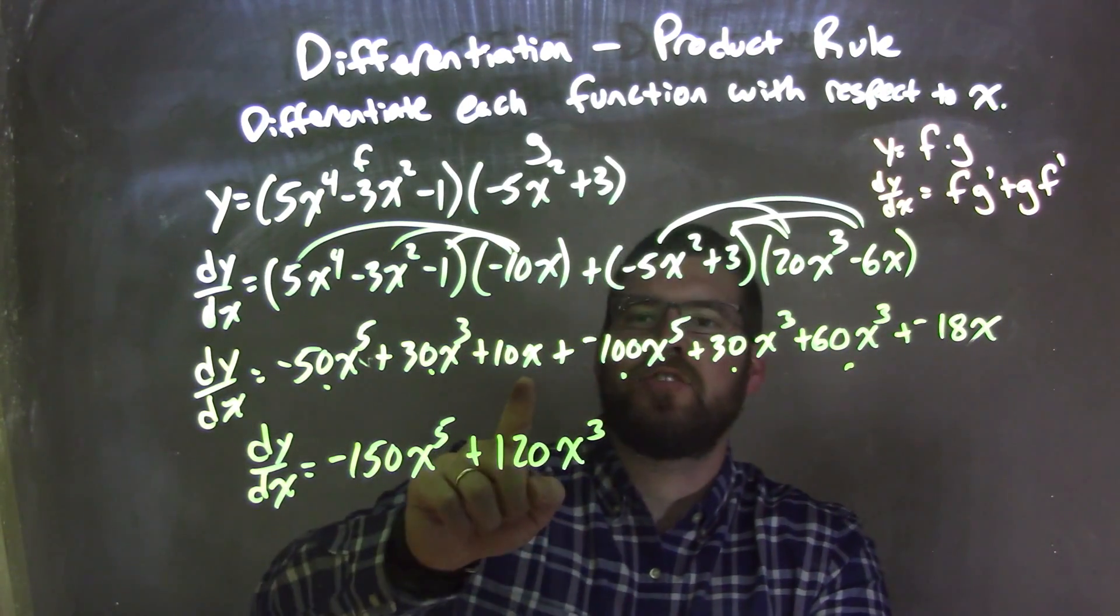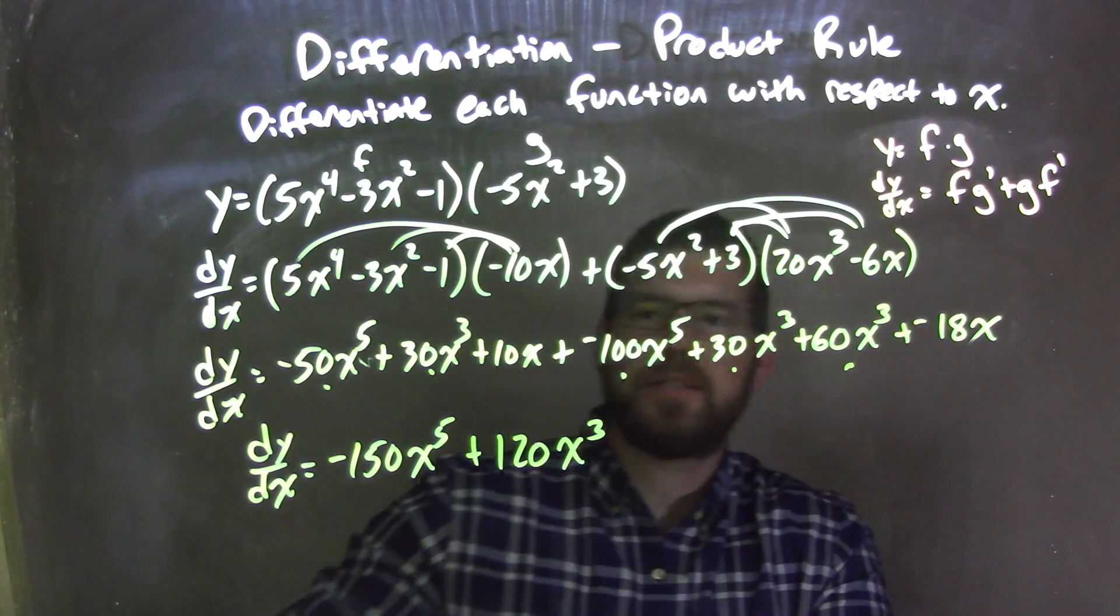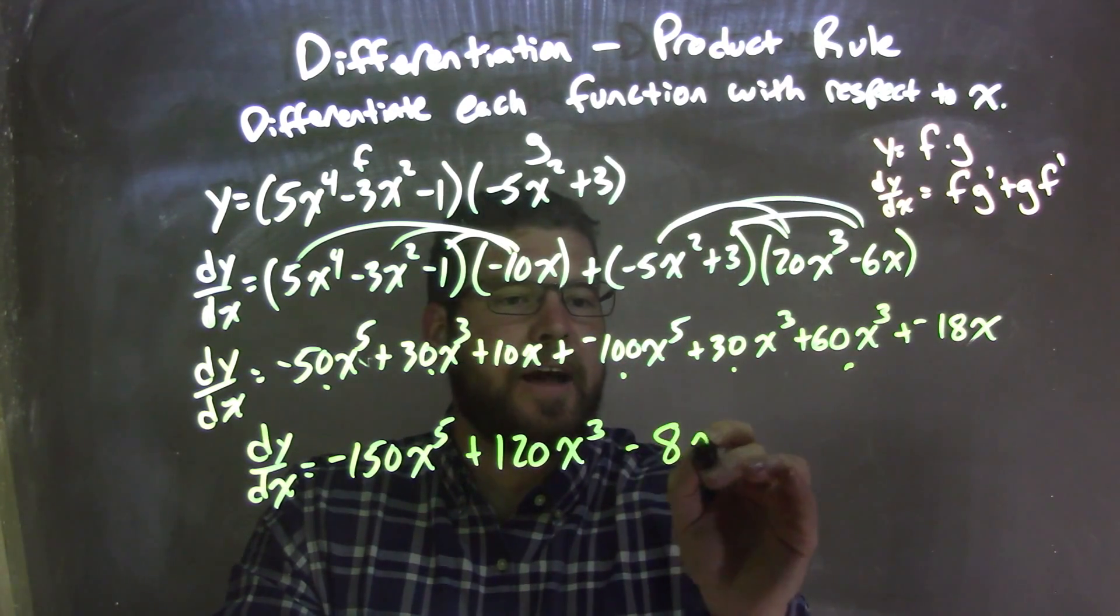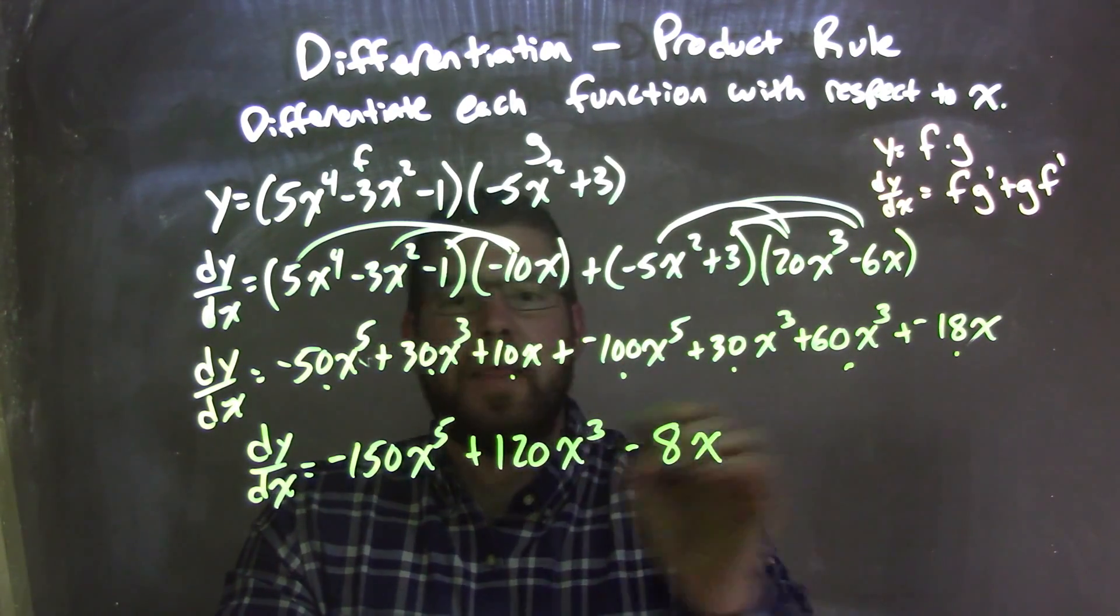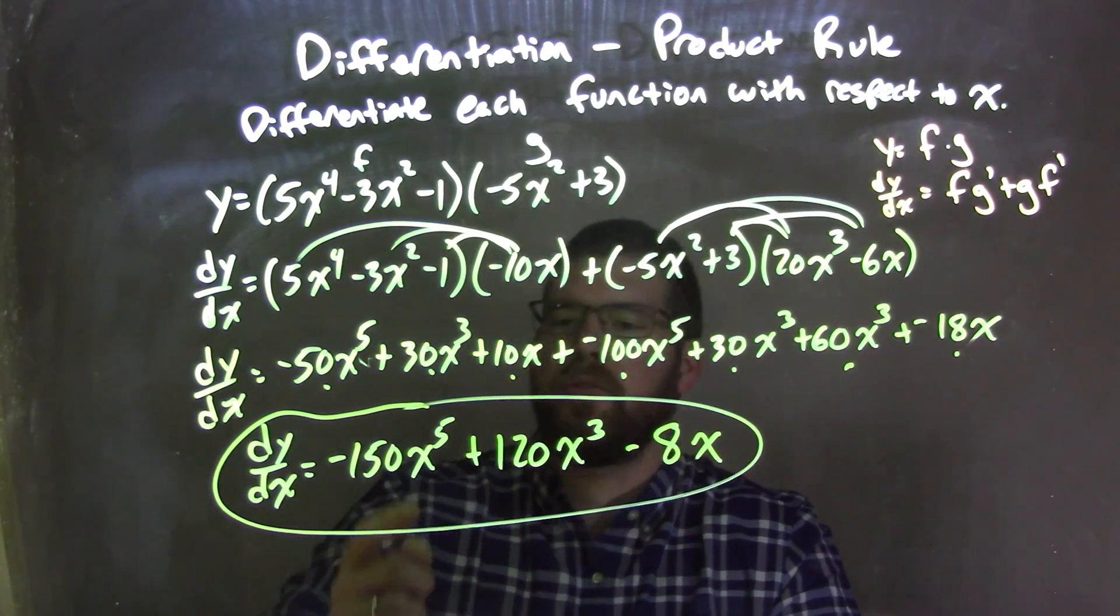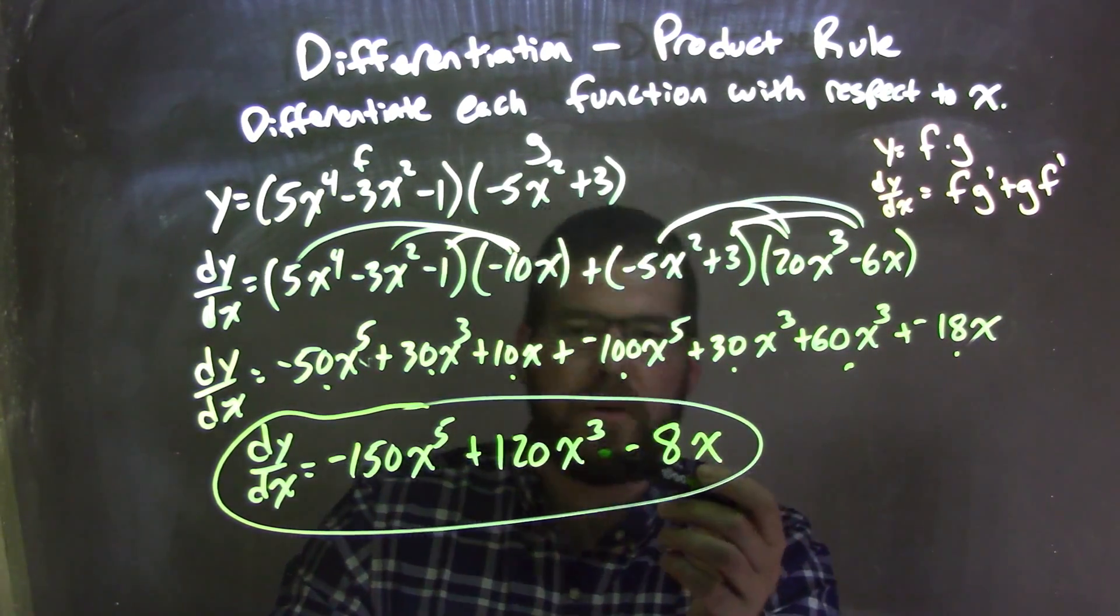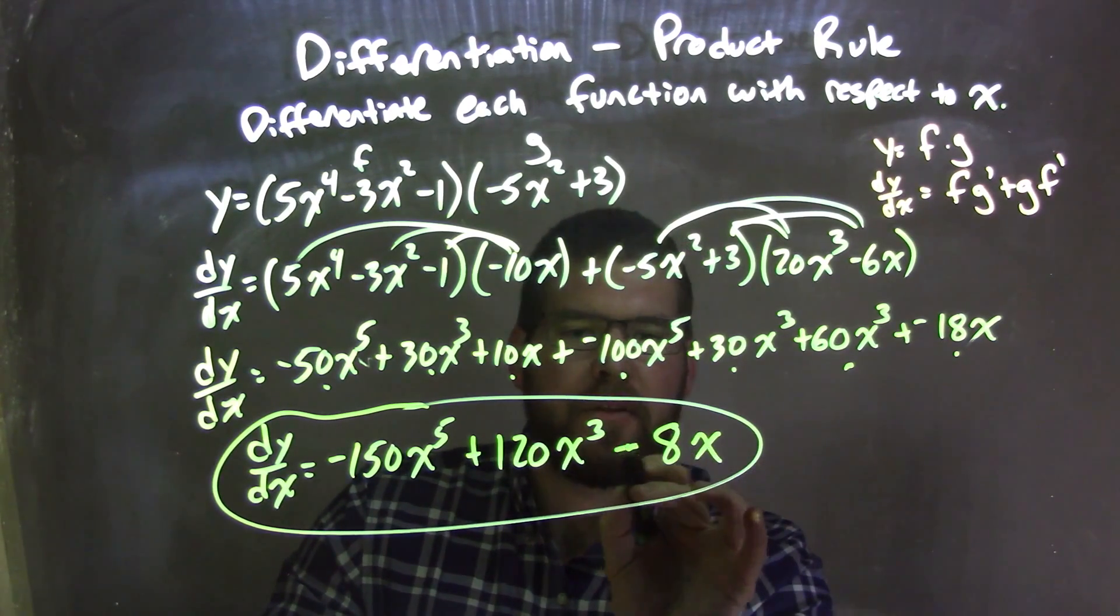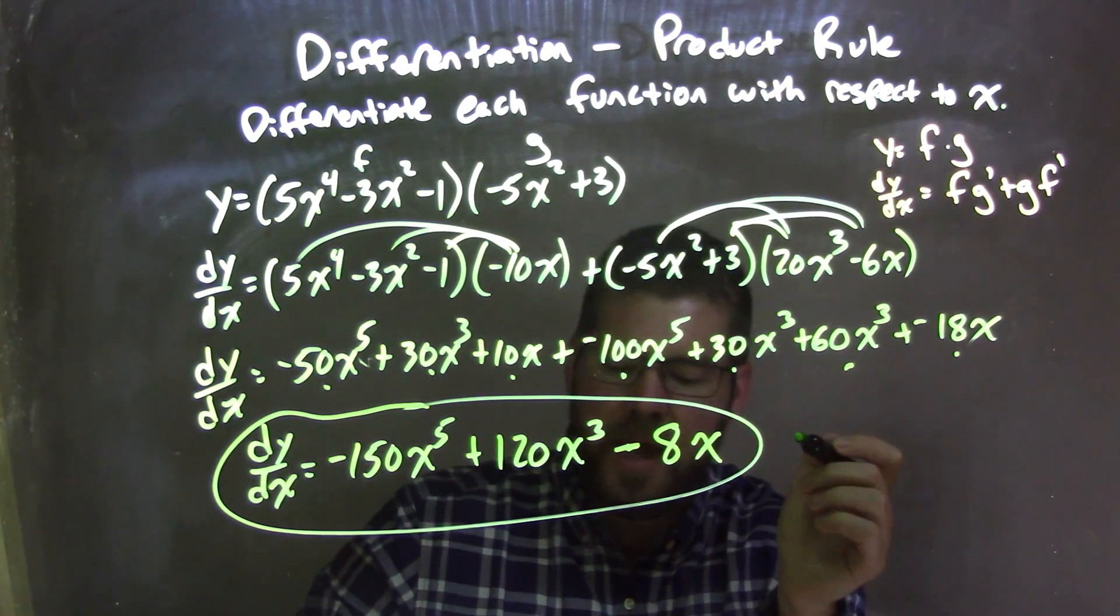The last ones I have are 10x and negative 18x, which is negative 8x. I combine them together. And there we have our answer, our derivative: dy dx equals negative 150x to the 5th plus 120x to the 3rd minus 8x.